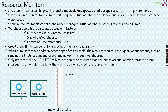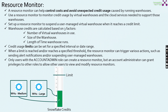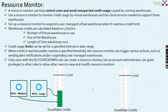As simple as it is, say I am running a WH1 warehouse which is of medium type and I am running a WH2 warehouse of large type. As long as these specific warehouses are running, they will contribute to the credits. Slowly, the Snowflake credits will be consumed based upon the warehouse usage.